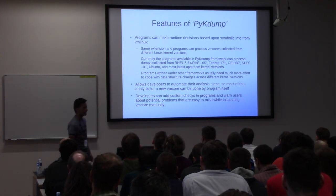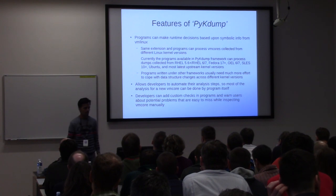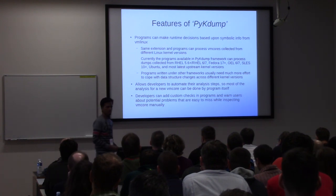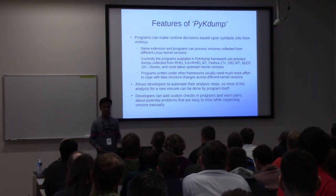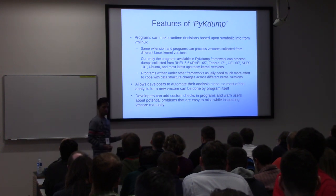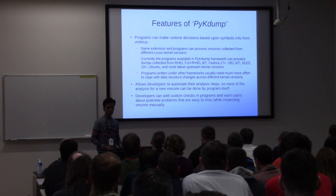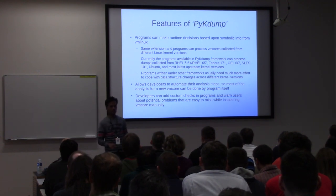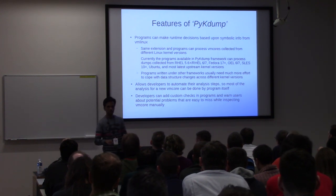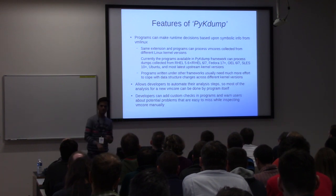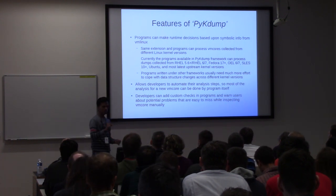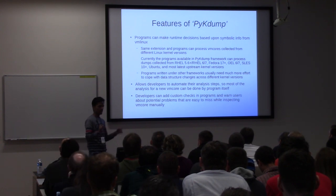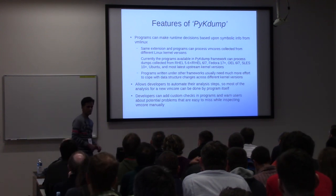There are more features of PYKDUMP that make it a premier choice for writing crash extensions. The same extension can be used for multiple different Linux versions. Currently the stable PYKDUMP binary is available from its upstream project page and is used within Red Hat and other vendors. It is able to process VM cores collected from RHEL 5.6, RHEL 6 all minor releases, RHEL 7 all minor releases, Fedora, Ubuntu, SUSE, OEL, any other major Linux distribution, as well as the upstream Linux kernel — all with the same binary. The beauty of how it achieves this will be discussed in the next slides.